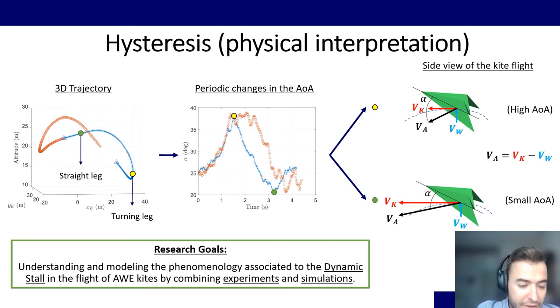Then we can define the research goals of the past year. So basically understanding and modeling the phenomenology associated with the dynamic stall in the flight of airborne kites. And as always, by combining experiments and simulations.